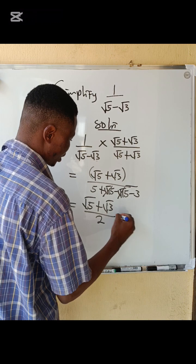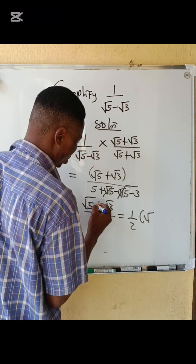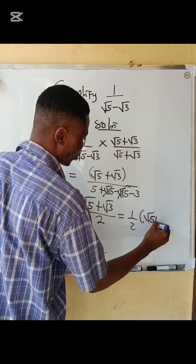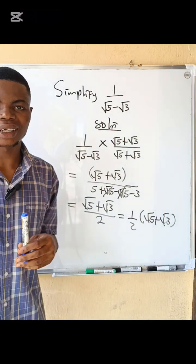So the final answer becomes 1 over 2 times root 5 plus root 3. Very simple!